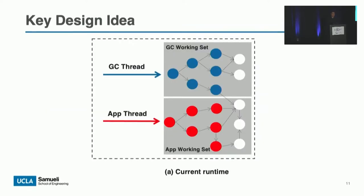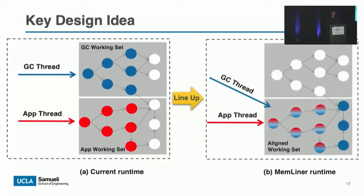Guided by these two observations, we propose Memliner, a runtime technique to line up GC and application through working set alignment. Currently, application threads access heap objects following their program execution path, while GC threads concurrently scan the heap performing graph traversal to mark live objects. The objects accessed by these two sets of threads are uncoordinated, creating two disjoint working sets. Memliner carefully reorders the objects traced by GC threads, letting them follow the application's access path so that sets of objects accessed by GC and applications at the same time are close to each other, alleviating resource contention and enabling the OS kernel prefetcher to recognize access patterns.